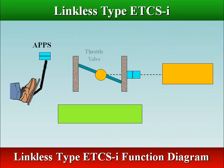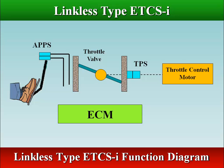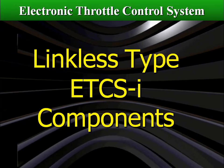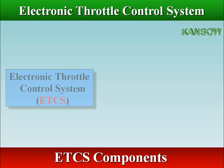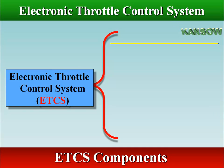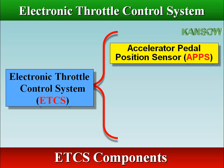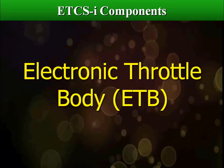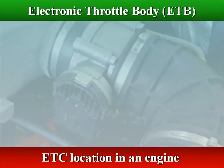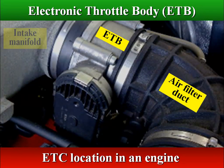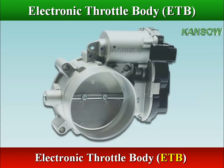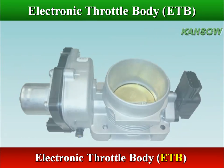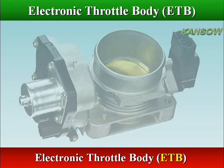The operation of this system is nearly identical to the link type. The electronic throttle control system consists of the accelerator pedal position sensor, electronic throttle body, and electronic control unit. An electronic throttle body (ETB) looks like a typical throttle body, and is fitted with an electronic servomotor or stepper motor and a throttle position sensor (TPS).